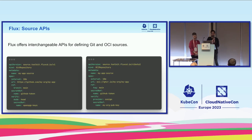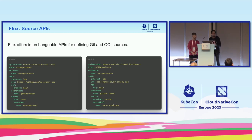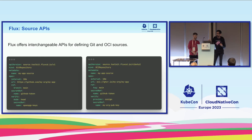We are now offering an interchangeable API called OCI repository, where instead of defining the source as a Git repo, you define the source as a container repository. Instead of following a Git tag or branch, you can tell Flux to follow an OCI artifact tag, or use a digest. The same way you can pin a Git repo to a particular SHA of a commit, you can pin an OCI artifact to a particular OCI digest. It's a mirror of what you could have done with a Git repository — the same things you can do with the OCI repository.